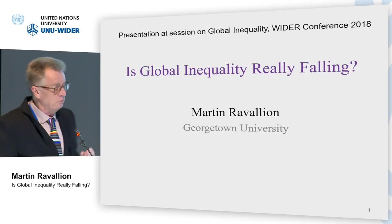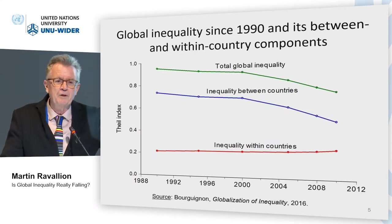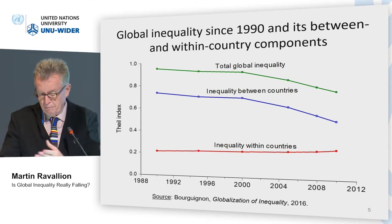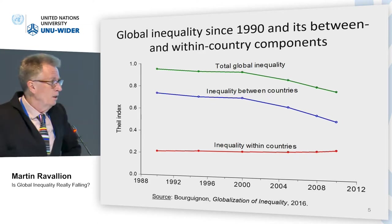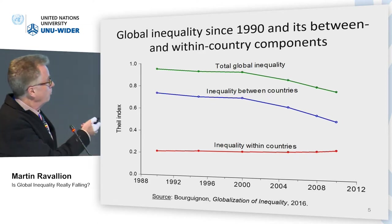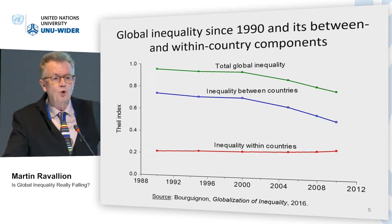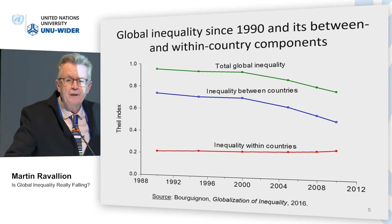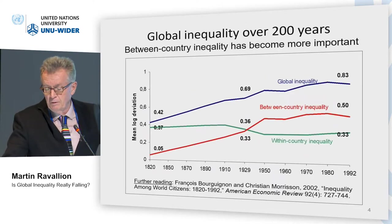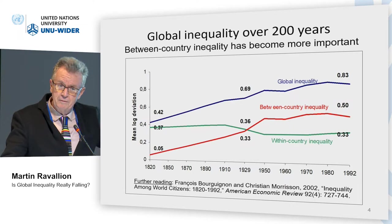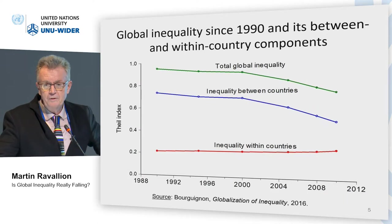Is global inequality really falling? This is the stylized fact I'm going to question today. This is one of many possible graphs showing the same thing one can construct from the data. It shows overall falls since about 1990 in global inequality — defined as pooling all people in the world, forgetting where they live, and constructing an equality measure on that distribution. Falling since 1990, though importantly it was rising back to 1820, so this is a significant change.